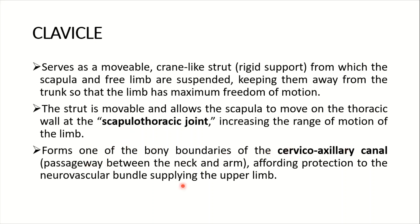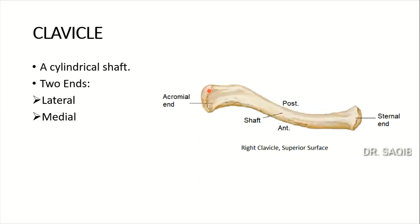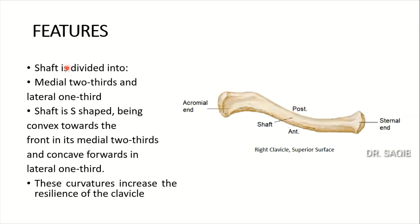The clavicle also forms one of the bony boundaries of the cervico-axillary canal — the passageway between the neck and arm — affording protection to the neurovascular bundles supplying the upper limb. Regarding bony landmarks: it has a cylindrical shaft, two ends (the lateral acromial end and the medial sternal end), an anterior surface, and a posterior surface. The shaft is sinuously curved, forming a capital S — the medial two-thirds is convex forwards and the lateral one-third is concave in front.